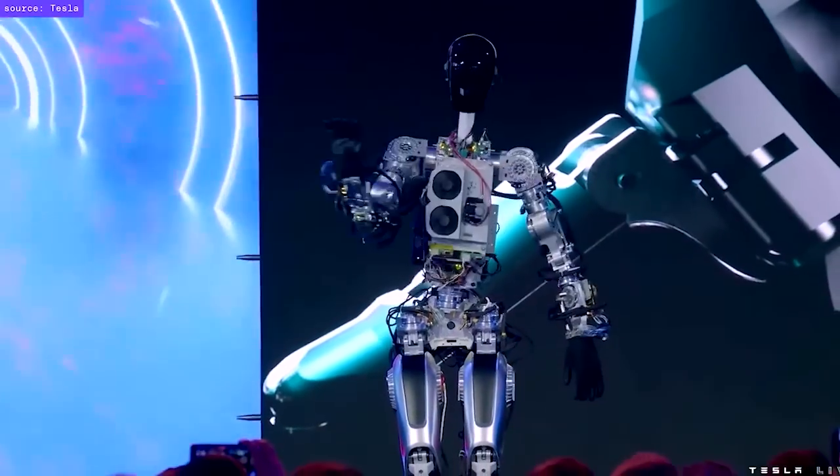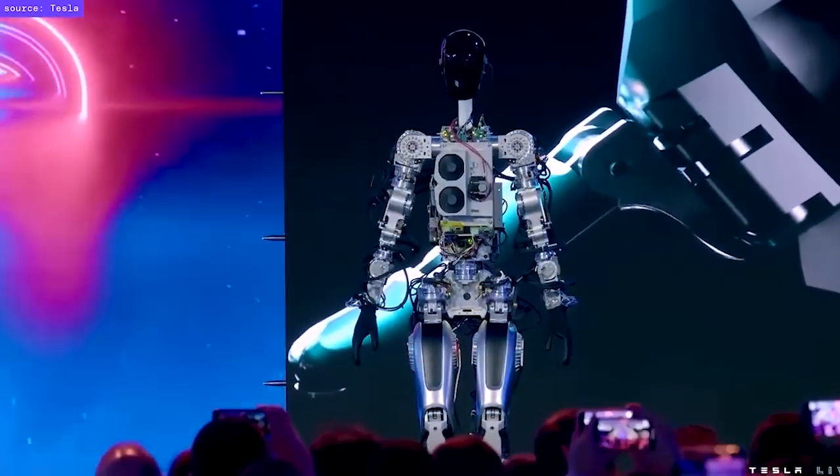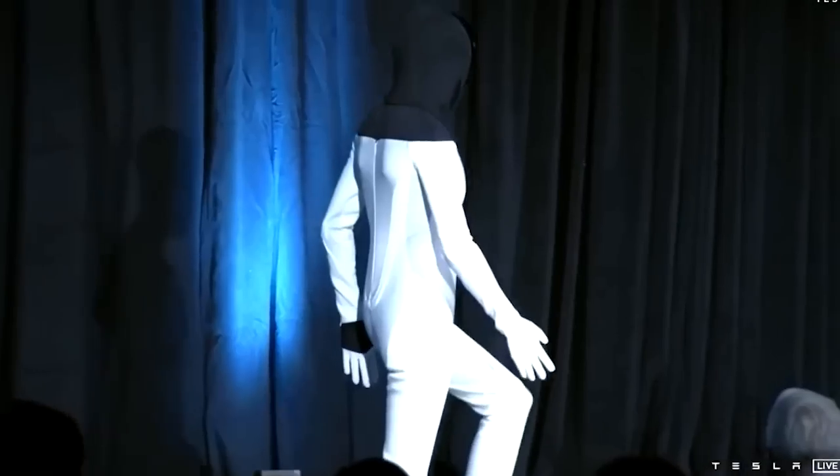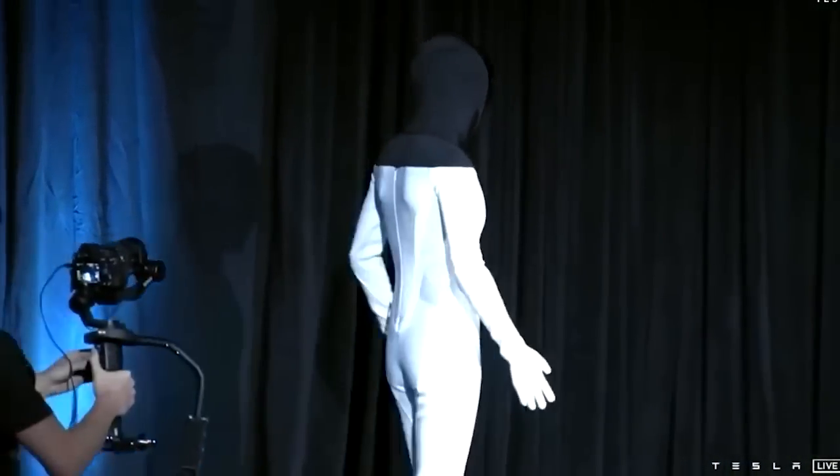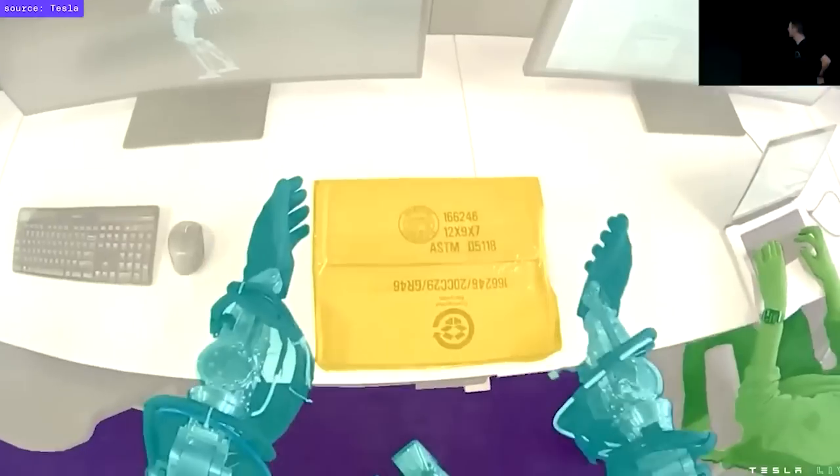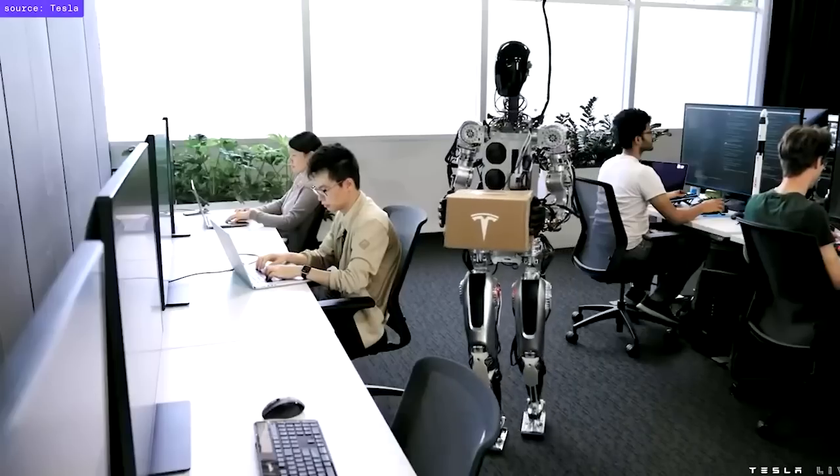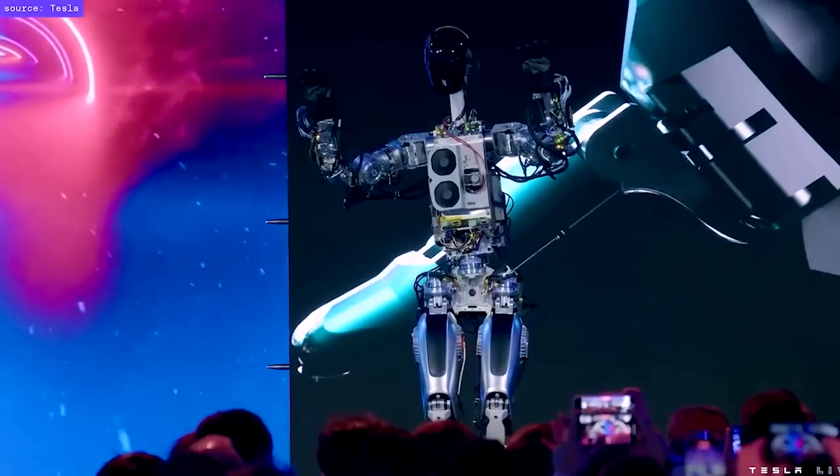Optimus is also loaded with a library of natural motion references, which are essentially recorded human motions optimized for real-world use. This allows the robot to complete tasks like grabbing a box off a shelf with fluid and natural movements.